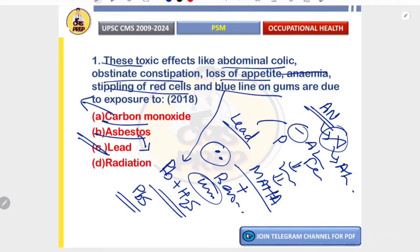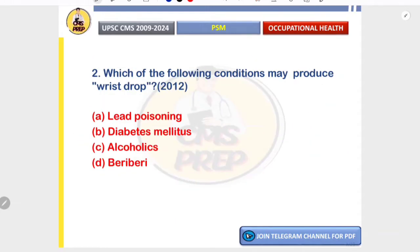Carbon monoxide leads to tissue hypoxia with no GI or gum effect. Asbestosis causes lung fibrosis and mesothelioma with no GIT involvement. Radiation leads to myelosuppression, not the specific anemia features described. Therefore the correct answer is C — lead.